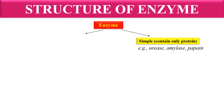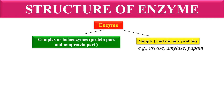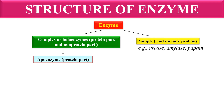But many enzymes are also formed of a non-protein part. When an enzyme is formed of both a protein part and a non-protein part, it is called a complex enzyme or holoenzyme. In this holoenzyme, the protein part is called the apoenzyme, while the non-protein part is called the prosthetic group.